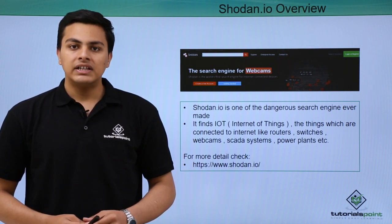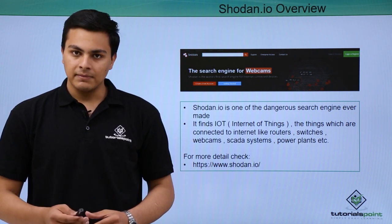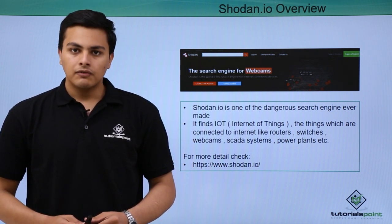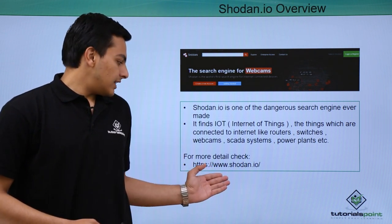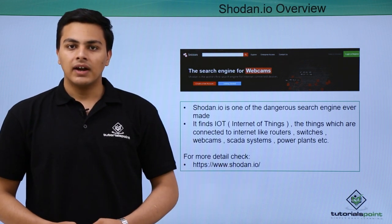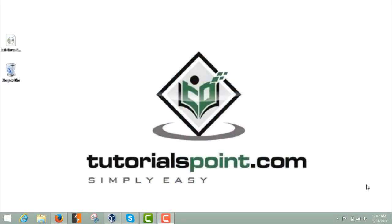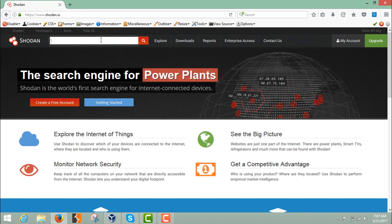With the help of Shodan we'll see how we can find public IP devices like webcams and SCADA systems. For more information you can visit their official website at www.shodan.io. Now let's go to Shodan.io — right now I'm on Shodan.io and here you can see the search bar. As I mentioned, we can scan for a particular device.